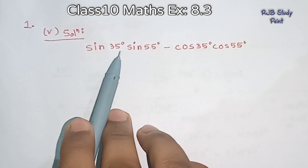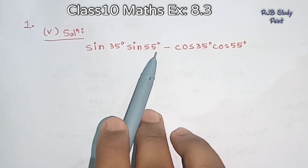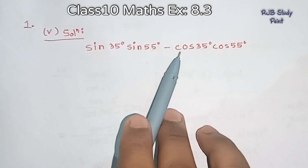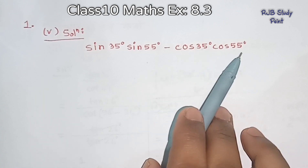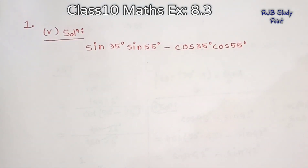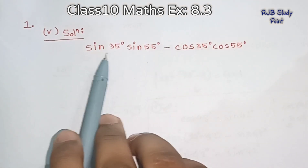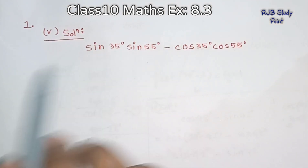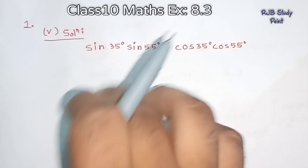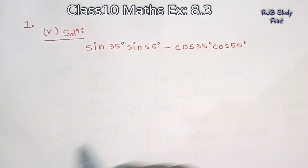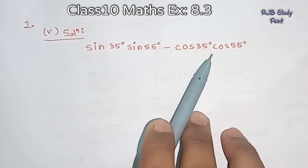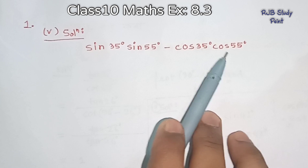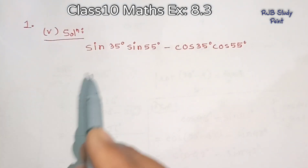The first question is: sin 35 degree times sin 55 degree, minus cos 35 degree times cos 55 degree.